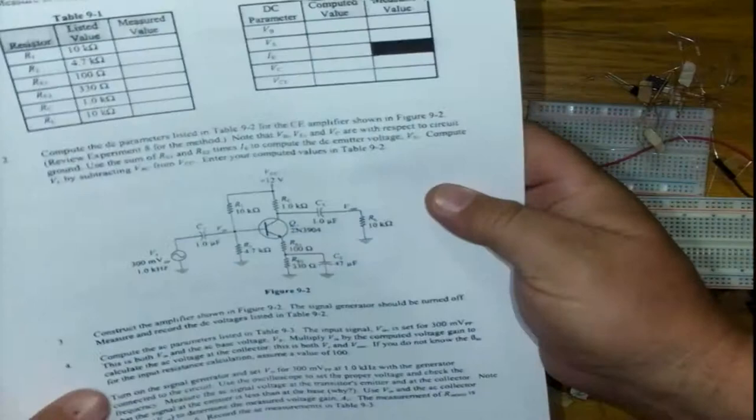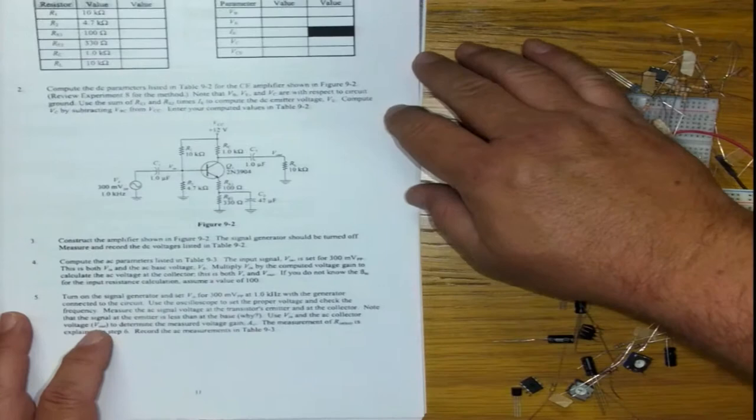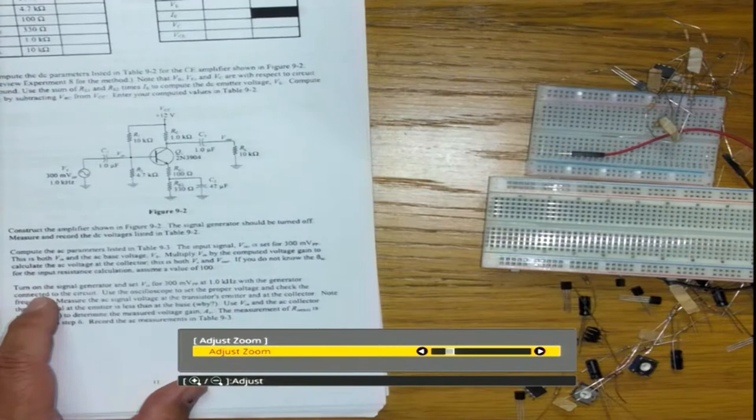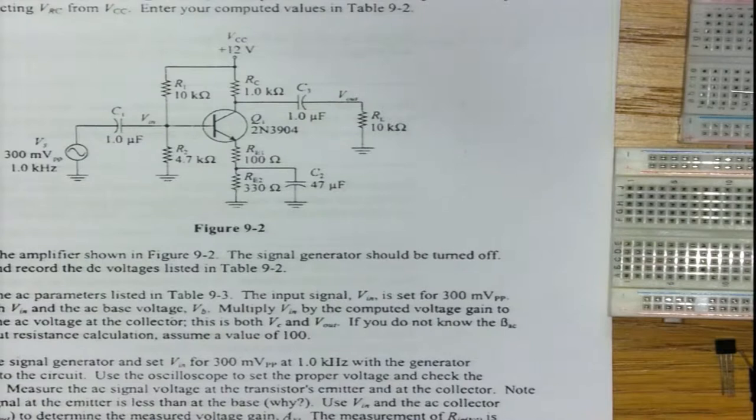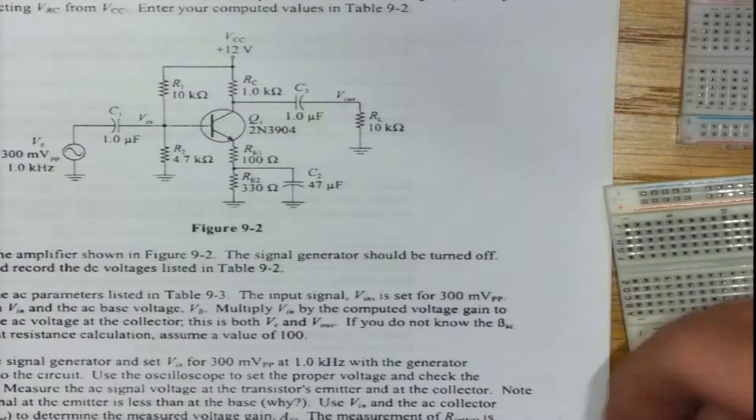So we are going to look at figure 9.2 for the common emitter amplifier. It's a very standard circuit and I am going to zoom in a little bit and make sure it's in the frame. But it's a very standard circuit. It's one of the first type of amplifiers that is usually encountered.